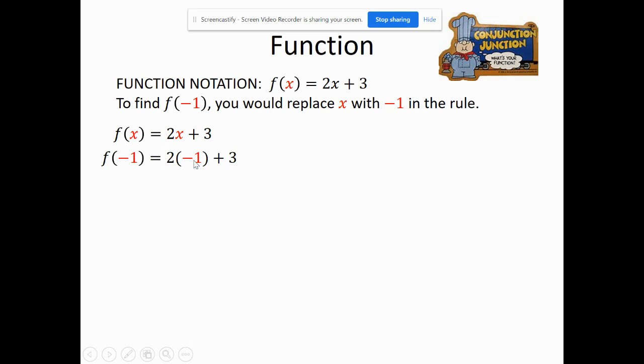And so, 2 times negative 1 is negative 2. So, we plug it in there, and then add the 3. It makes 1. So, then we end up with the ordered pair negative 1, 1.